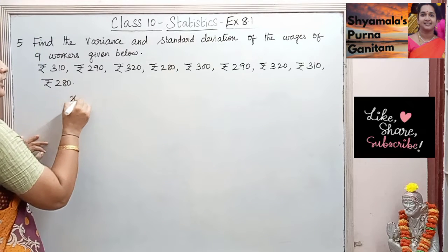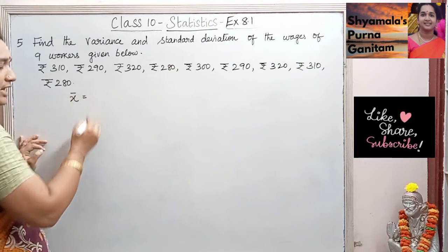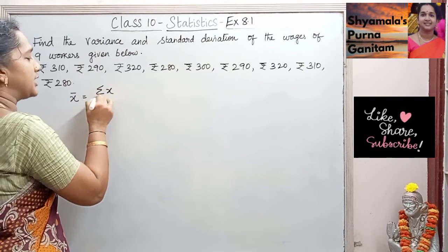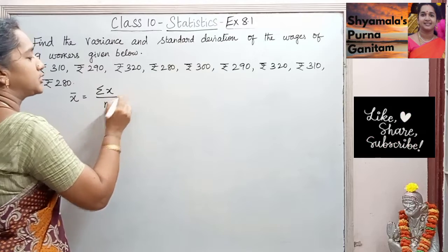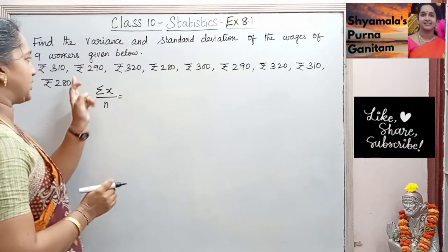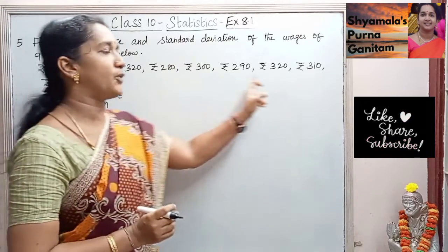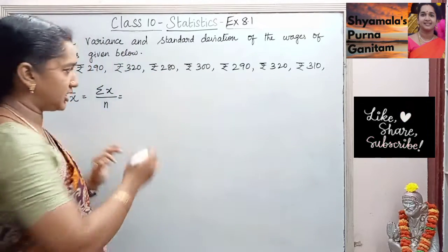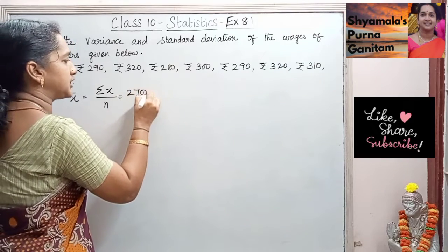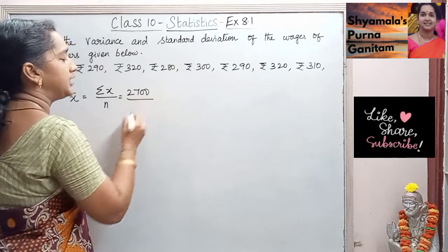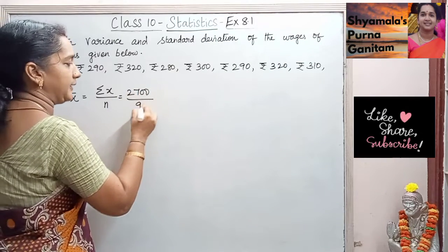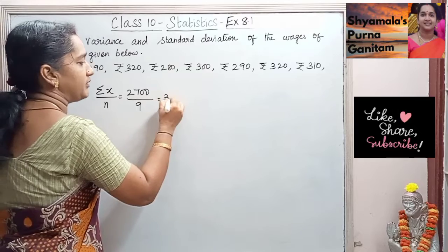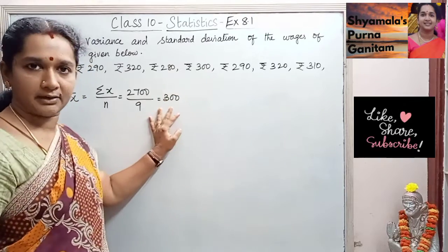First, we will find the arithmetic mean. X̄ is equal to σx/n. When we find the sum of all these 9 wages, we get 2700 divided by 9, which gives us 300. So 300 is the arithmetic mean.